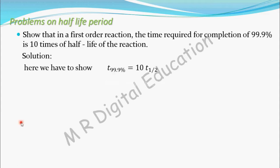Solution: here we have to show t99.9% — that is the time required for 99.9% — is equal to 10 times of t-half. To show this, we have to form two equations: one for t99.9% and one for t-half. When you divide those two equations, you will get this result. See how.